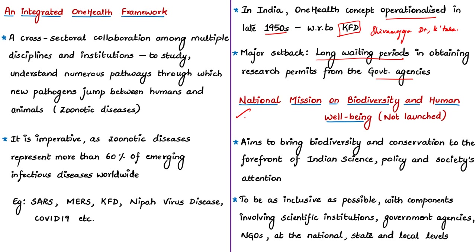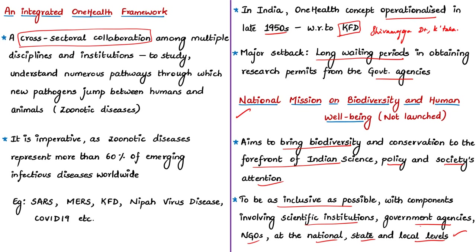The National Mission on Biodiversity and Human Well-being has been prepared by a group of scientists from several institutions. It aims to bring biodiversity and conservation to the forefront of Indian science policy and society's attention. The mission is visualized to be inclusive, with components involving scientific institutions, government agencies, and NGOs at the national, state, and local levels. Importantly, note that this mission has only received in-principle approval — it is yet to be formally launched by the government.